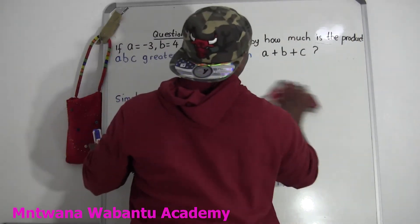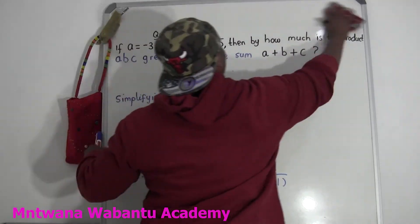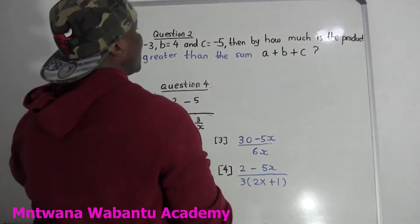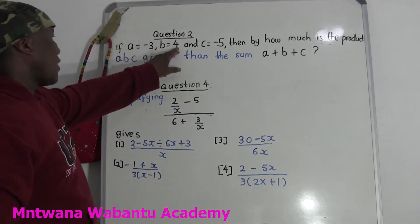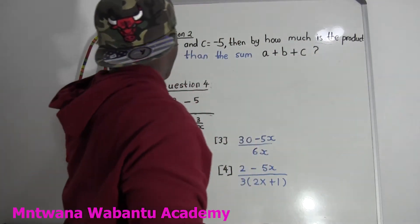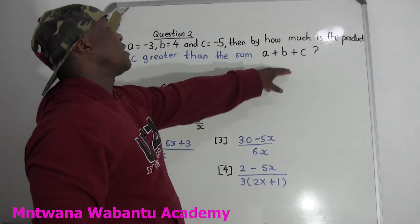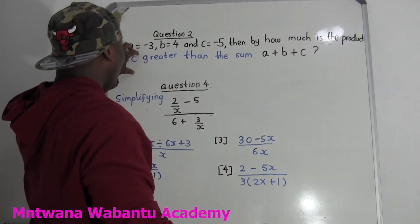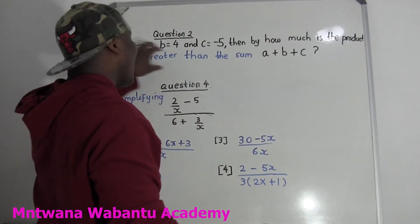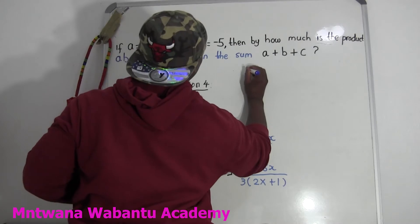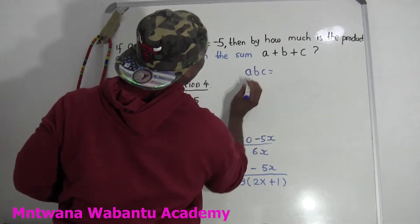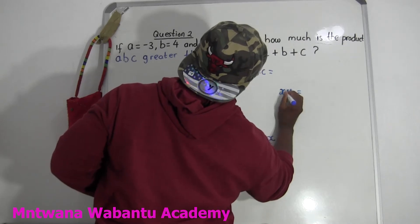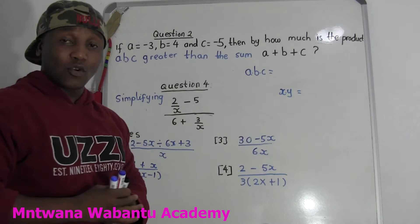Let's go to question number 2. Question number 2 is easy. They say: if A equals negative 3, B equals 4, and C equals negative 5, how much is the product of ABC greater than the sum? First and foremost, you need to find the value of each group. Get the product and then get the sum, and then find how much one is bigger than the other. Product means multiplication. When there's no sign, there's a multiplication between them. So ABC means A times B times C.